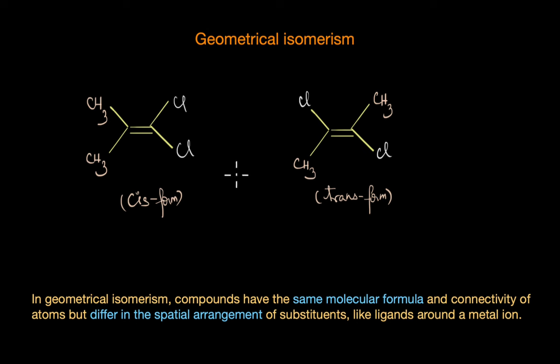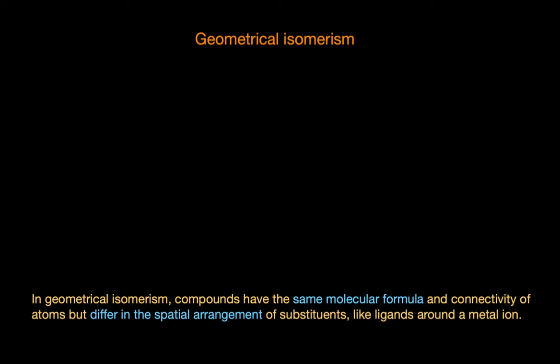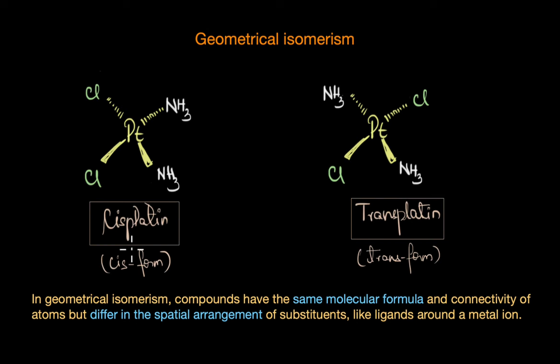And something similar happens in coordination compounds too. Coordination compounds also exhibit cis and trans isomers, not because their arrangement is restricted by some double bond, but because the ligands are located at fixed positions around the central metal ion. Now remember, the cis and trans isomers are not there in every coordination compound. These isomers are possible only in certain geometries like square planar and octahedral complexes. But let's get to that later because that's for an entirely different video.